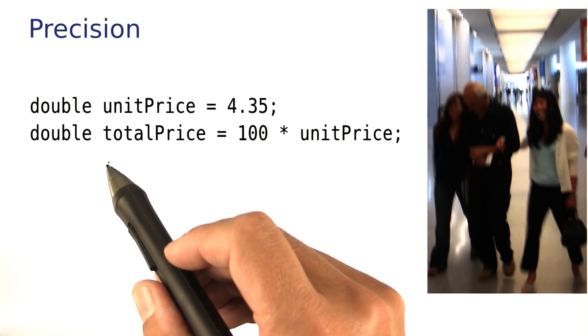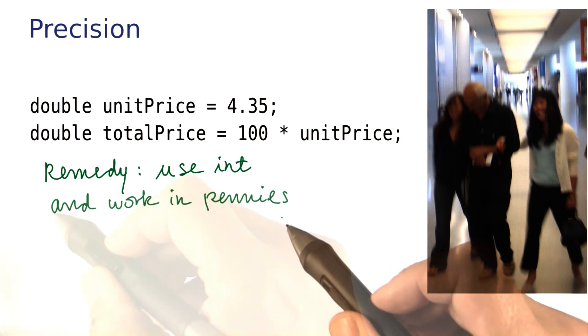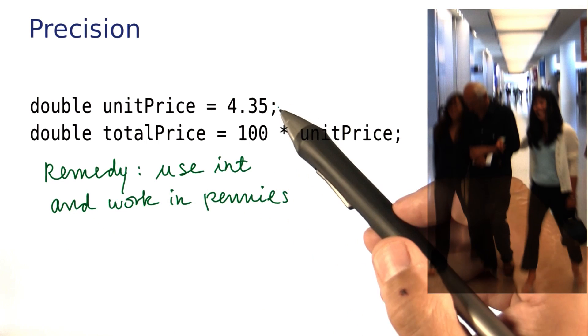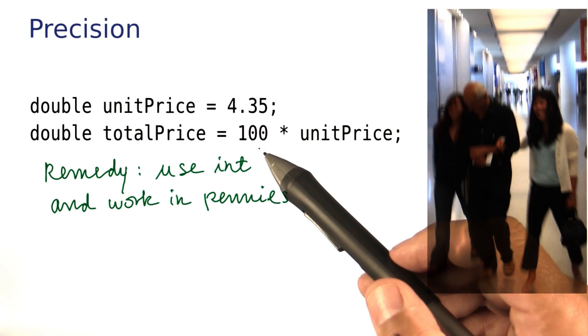Now in this case, if we don't want to lose any pennies, the remedy would be to use integers and work in pennies. If this had been 435 pennies as an integer, 100 times 435 would not have been a problem.